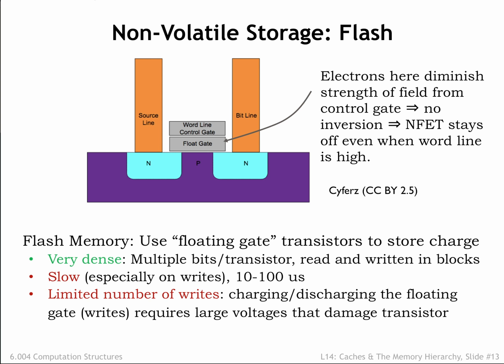Flash memories can only be written some number of times before the insulating layer is damaged to the point that the floating gate will no longer reliably store charge. Currently the number of guaranteed writes varies between 100,000 and 1,000,000. To work around this limitation, flash chips contain clever address mapping algorithms so that writes to the same address are actually mapped to different flash cells on each successive write.